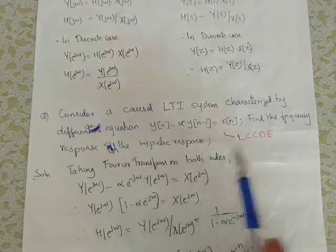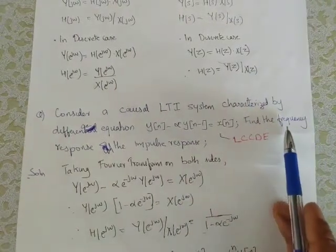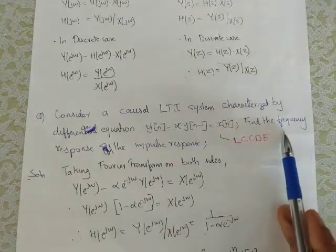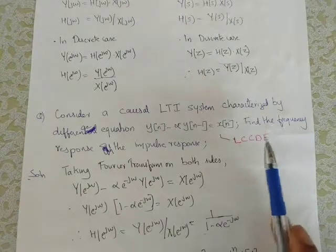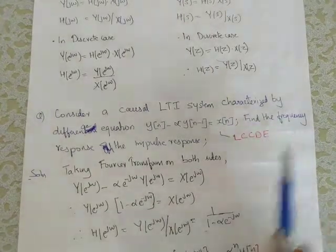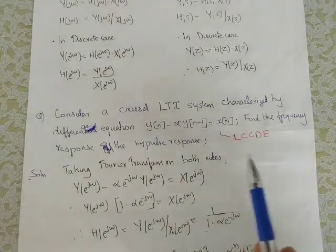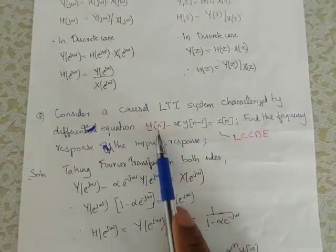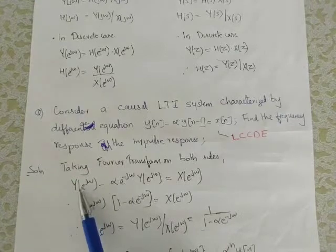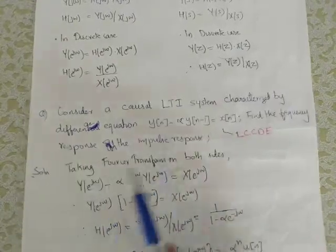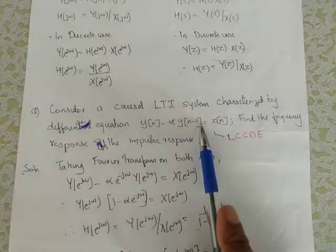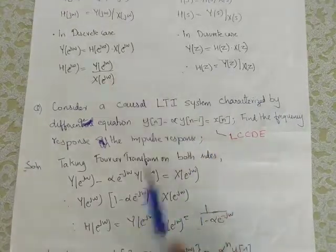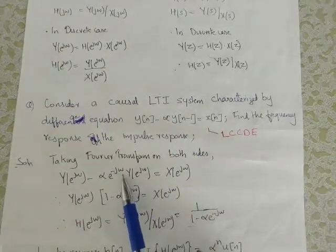There is a difference equation. Now we are going to find the frequency response. The frequency response uses the Fourier transform. We will take the Fourier transform: y of n transforms to Y of e raised to j-omega. Y of n minus 1, which is 1 time shifted, transforms to e raised to minus j-omega times Y of e raised to j-omega.